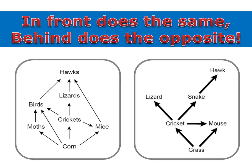This same concept works with food webs. Let's say an insecticide caused a decrease in the cricket population. In front of the crickets, all organisms would do the same — further down the food web, the birds, lizards, and mice would all decrease because they would have fewer crickets to eat. But behind the crickets, the corn population could see an increase because fewer crickets would be eating the corn.